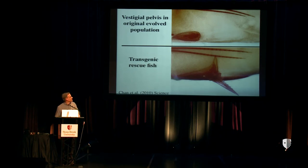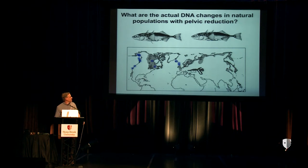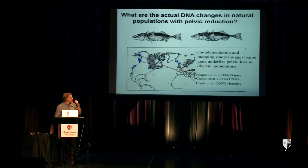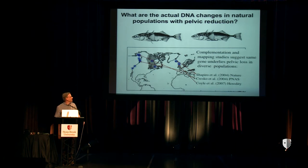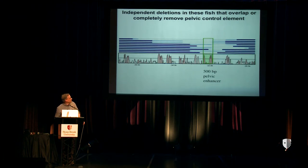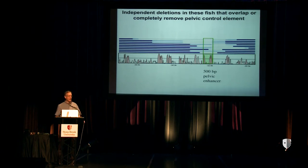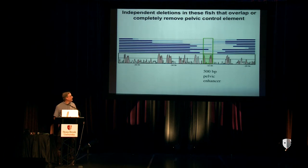So we really do think this is the right thing. One of the great things about sticklebacks is that the same traits have evolved in lots of populations around the world. Lots of interesting work using complementation and genetic mapping studies has shown that independent populations from different locations around the world use the same major chromosome region over and over again when pelvic reduction evolved. When Frank isolated DNA from a whole series of pelvic-reduced populations, he found that multiple independent populations had small deletions of a few hundred to a few thousand bases that always overlapped this pelvic enhancer — repeated evolution by repeated deletion of the same regulatory information.